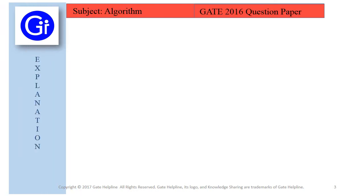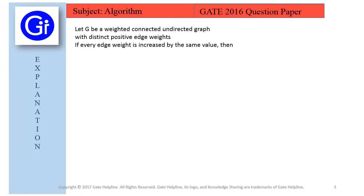Now we will see the explanation to this question. In this question we are given a weighted connected undirected graph with distinct positive edge weights, and there is a condition that if every edge weight is increased by the same value, then whether the following statements are true or false.